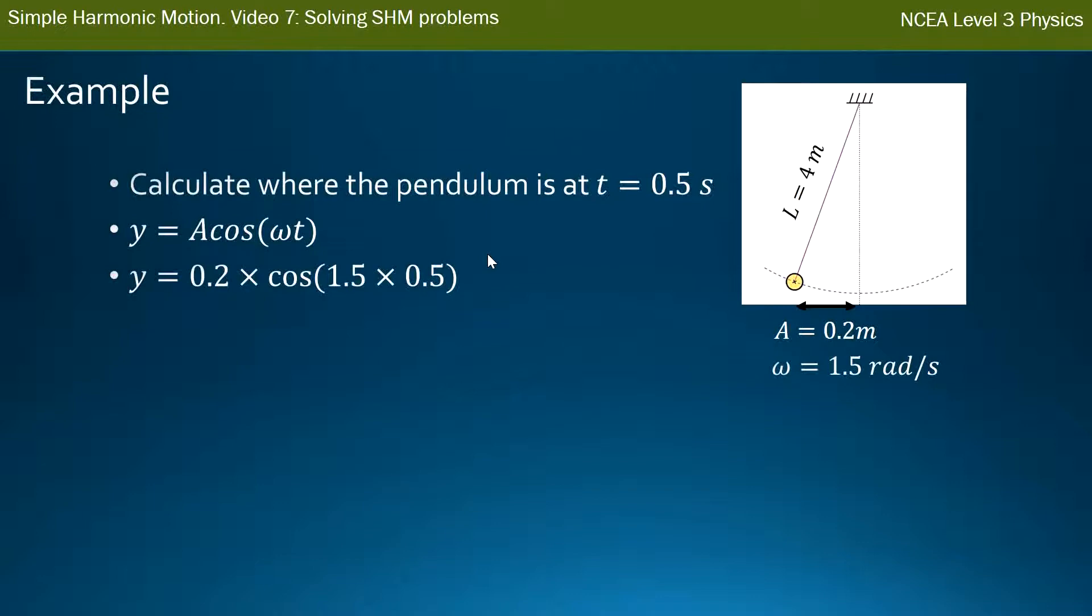So cos of omega t, 1.5 times the time 0.5 seconds, gives me 0.146 meters. Now my coordinate system says that middle is zero and to the left is positive. This is a positive number, so my pendulum is still out to the left and it's 0.146 meters from the middle.